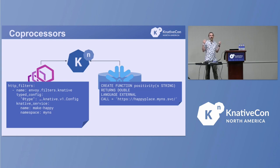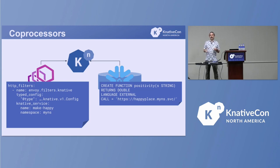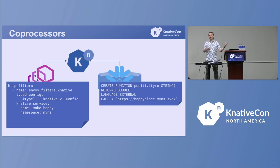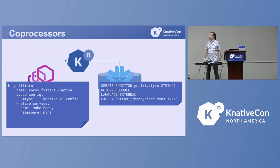Coprocessors — none of these exist today, but it would be really nice if you could tell Envoy to do something more complex by calling out to Knative. For example, if a customer spends more than ten thousand dollars you route them to a slightly different set of API endpoints. It would be great if you could do that with serving, just plug in and make Envoy better.